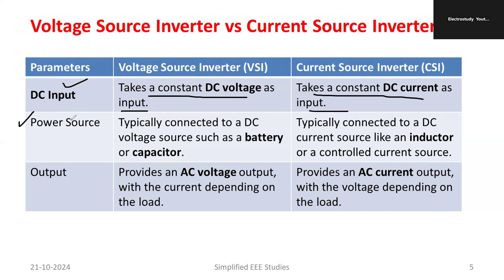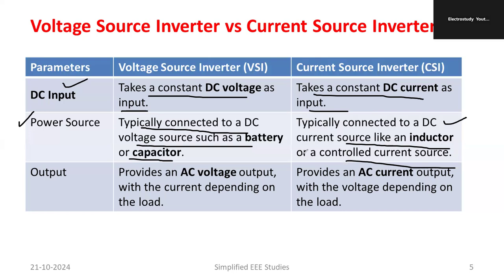Regarding the power source, the VSI is typically connected to a DC voltage source such as a battery or capacitor. When it comes to CSI, it is typically connected to a current source such as an inductor or current-controlled sources. That is another difference regarding the power source.